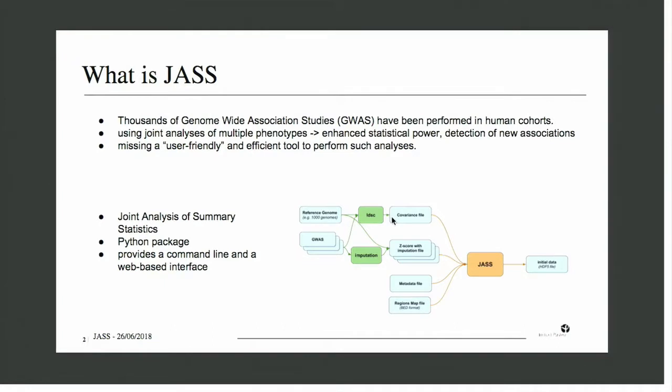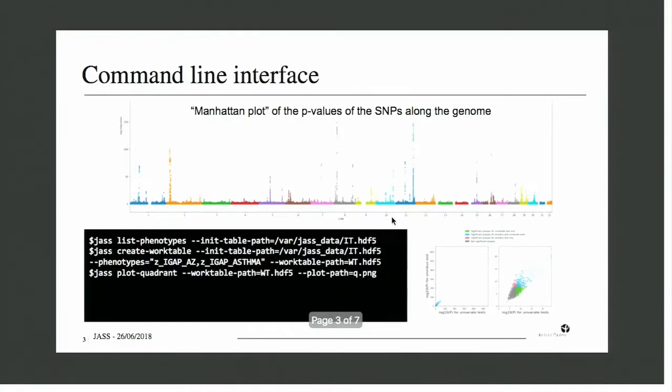Then you can first use the command line interface to run joint analysis over a set of selected GWAS analysis and create a set of different plots. For instance, you can create a Manhattan plot that will show which are the most interesting SNPs on the analysis that you just run. And you also can create a quadrant plot. So all of this can be done from the command line, and it's all well.